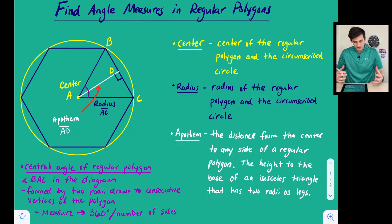Next we'll talk about the apothem. The apothem is our white segment here that goes from the center to the edge of the regular hexagon. So the apothem is the distance from the center to any side of a regular polygon, the height to the base of an isosceles triangle that has two radii as legs.